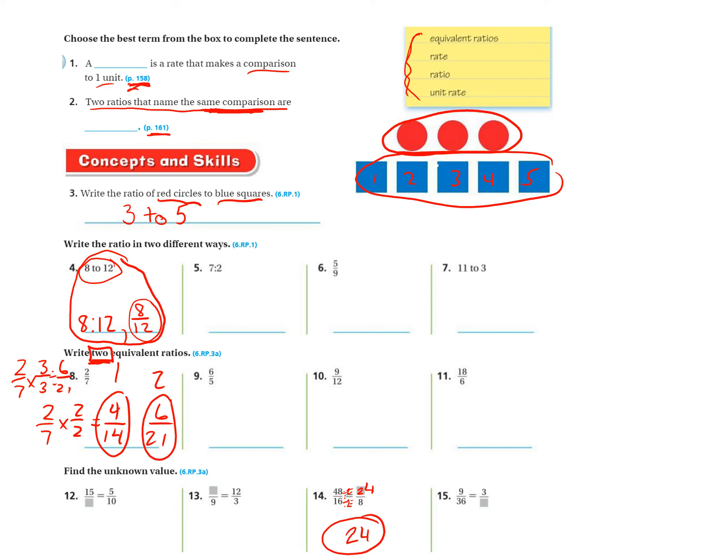All right, so you're going to use a similar strategy. You're going to be either dividing or multiplying by the same number to find the equivalent ratio. And then that will allow you to find the missing value. All right, thanks for watching. I'll see you on the next one.